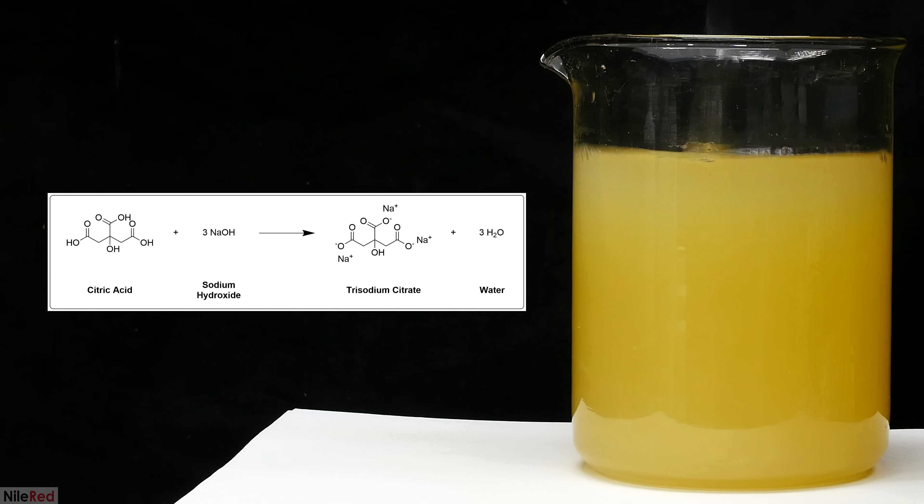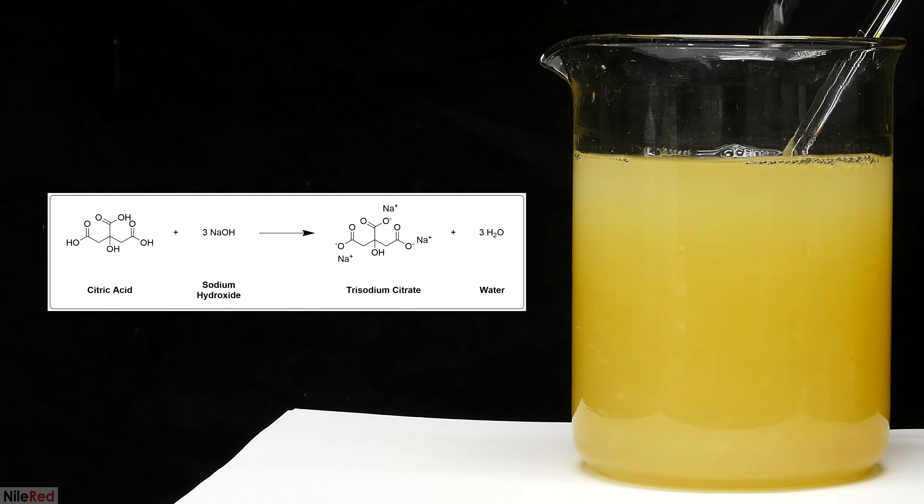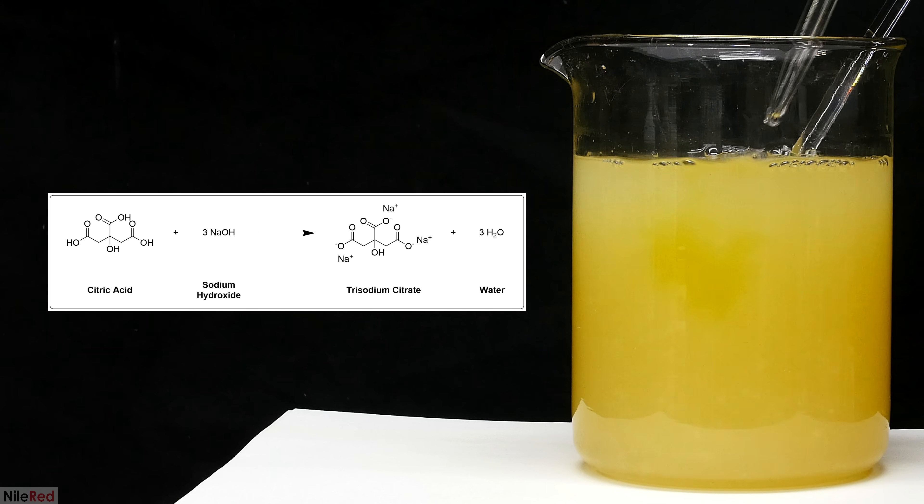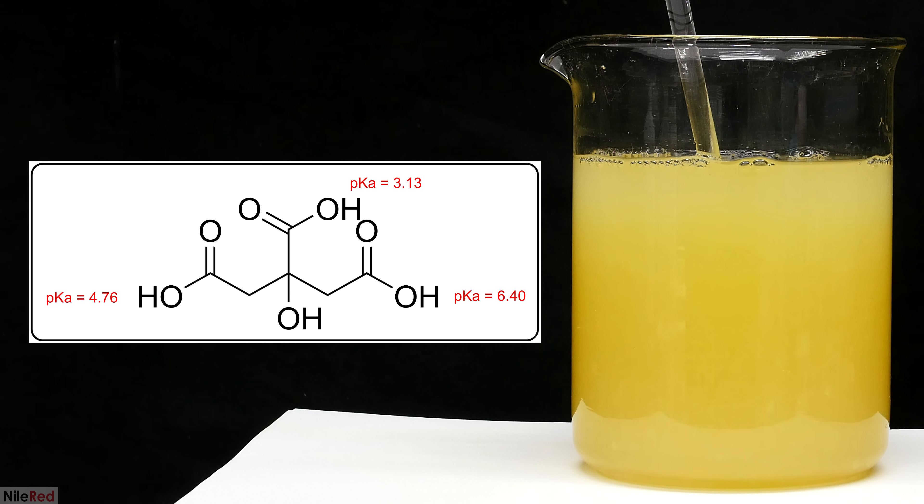The citric acid reacts with three molecules of sodium hydroxide to form trisodium citrate and water. Like citric acid, sodium citrate is very water soluble so it will just remain dissolved in solution. The citric acid has three carboxylic acid groups so it needs three sodium hydroxide molecules to be neutralized. The three carboxylic acid groups have different acidities and they're not all neutralized at once.